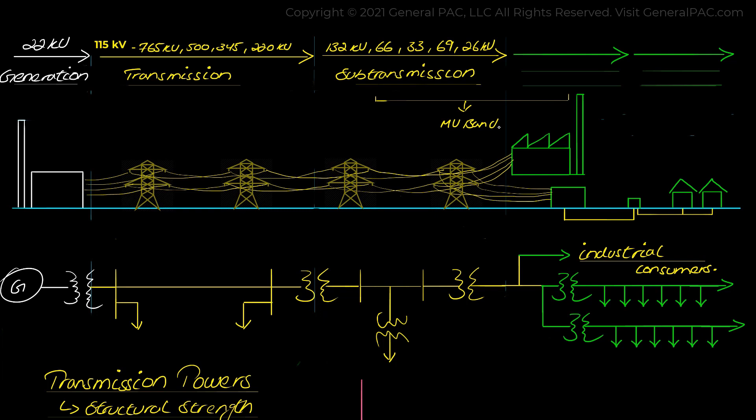And the sub transmission system then steps down to the primary distribution systems through distribution substations. And the voltage level here can be 13.2 kV or 4 kV in the United States and 33